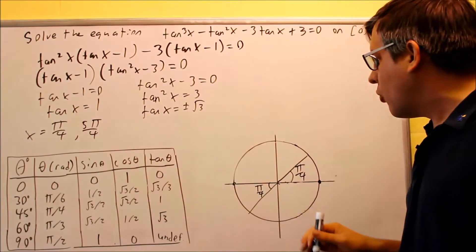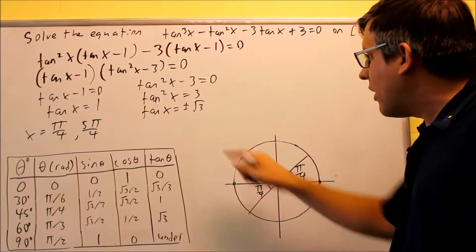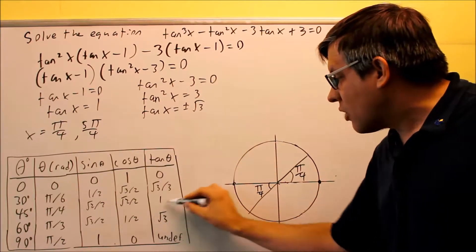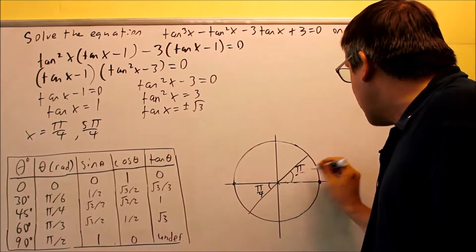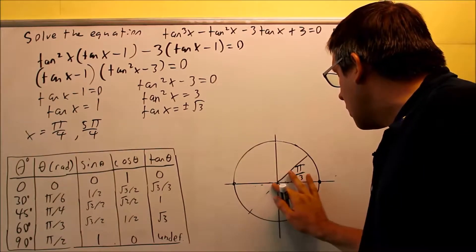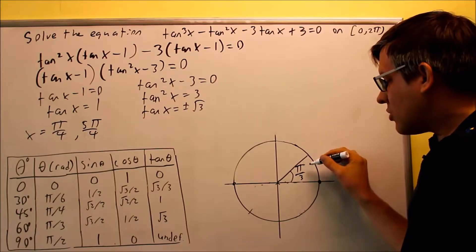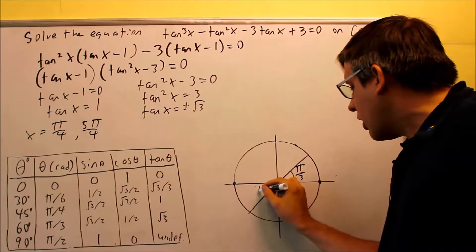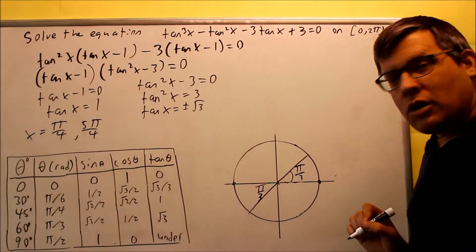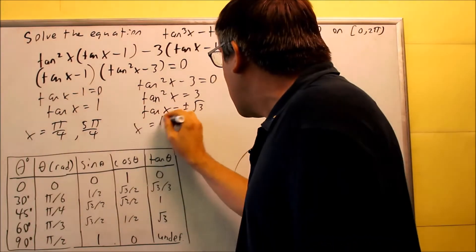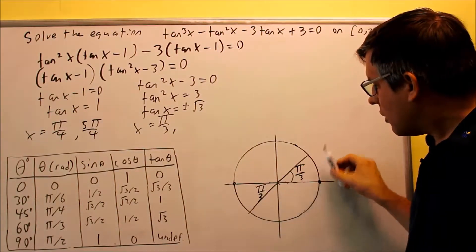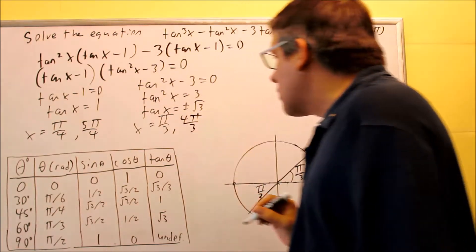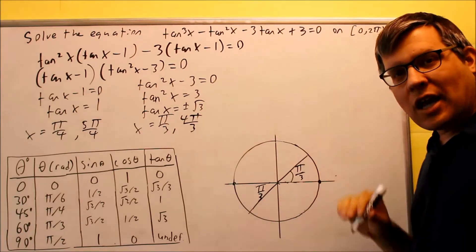Now I have to look at tangent x equals positive and negative square root of three. Let's look at positive square root of three first. We go down the tangent column — here's square root of three — and that refers to a reference angle of pi over three. So pi over three is one of our first answers. If I want to find another place where tangent equals positive square root of three, we already said it's also positive in the third quadrant. So I have another pi over three reference angle there. To find that angle: pi plus pi over three gives four pi over three. So that's the second solution for the positive square root of three case.